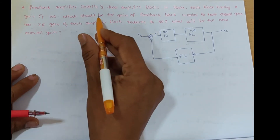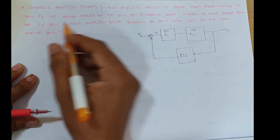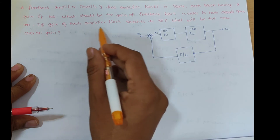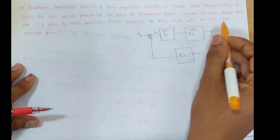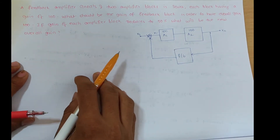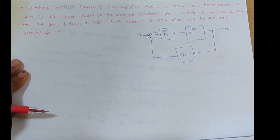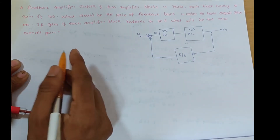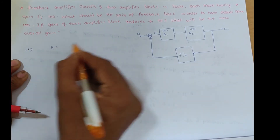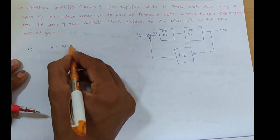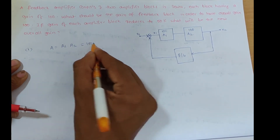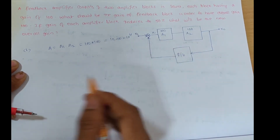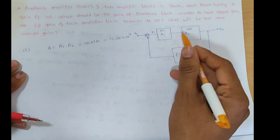Next problem: A feedback amplifier consists of two amplifier blocks in series, each block having a gain of 100. What should be the gain of the feedback block to have an overall gain of 100? If the gain of each amplifier block reduces to 50%, what will be the new overall gain? Overall gain A = A1 × A2 = 100 × 100 = 10,000 (10^4). This is the overall voltage gain of the two cascaded amplifiers.